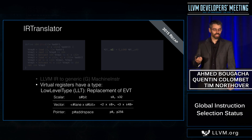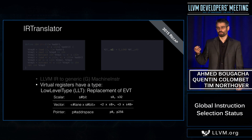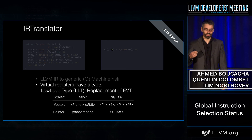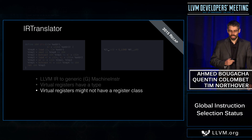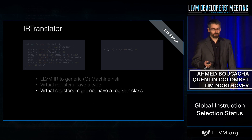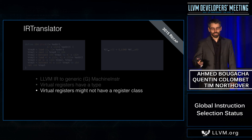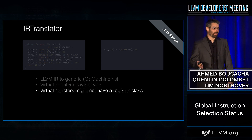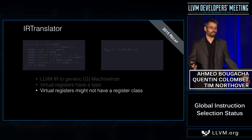LLT supports three kinds of types: scalar, represented by S and the number of bits; vector, represented by the number of lanes and the number of bits; and pointer, which is P followed by the number of the address space. Another thing to notice is that virtual registers at this point may not have a register class — the instruction may not even be legal for your target, so there's no way to assign a register class yet, represented here by an underscore.